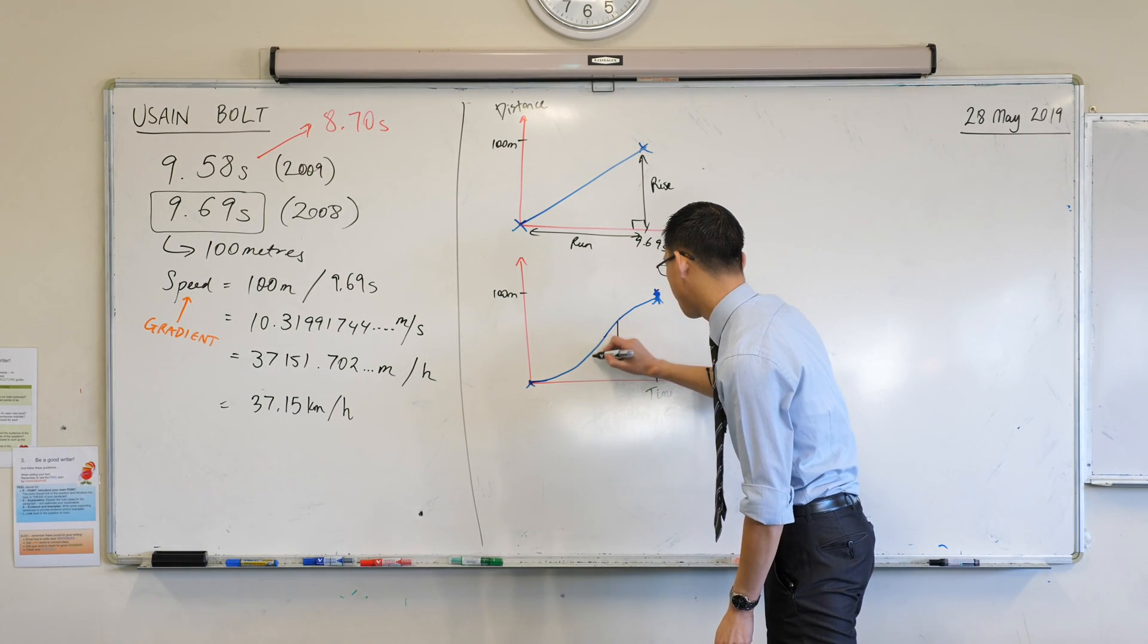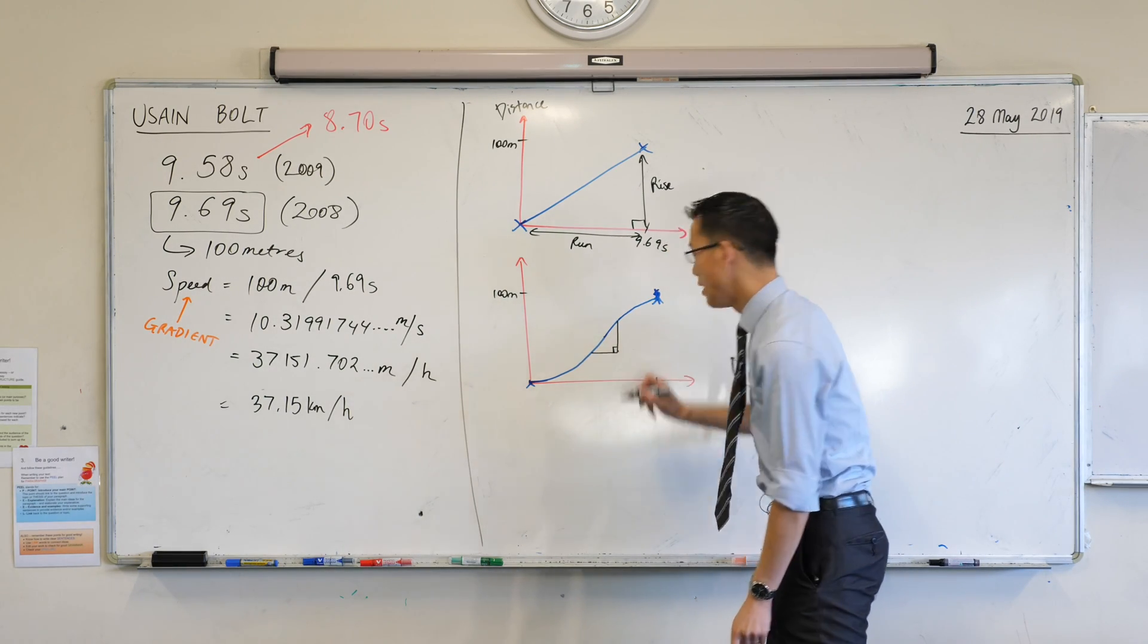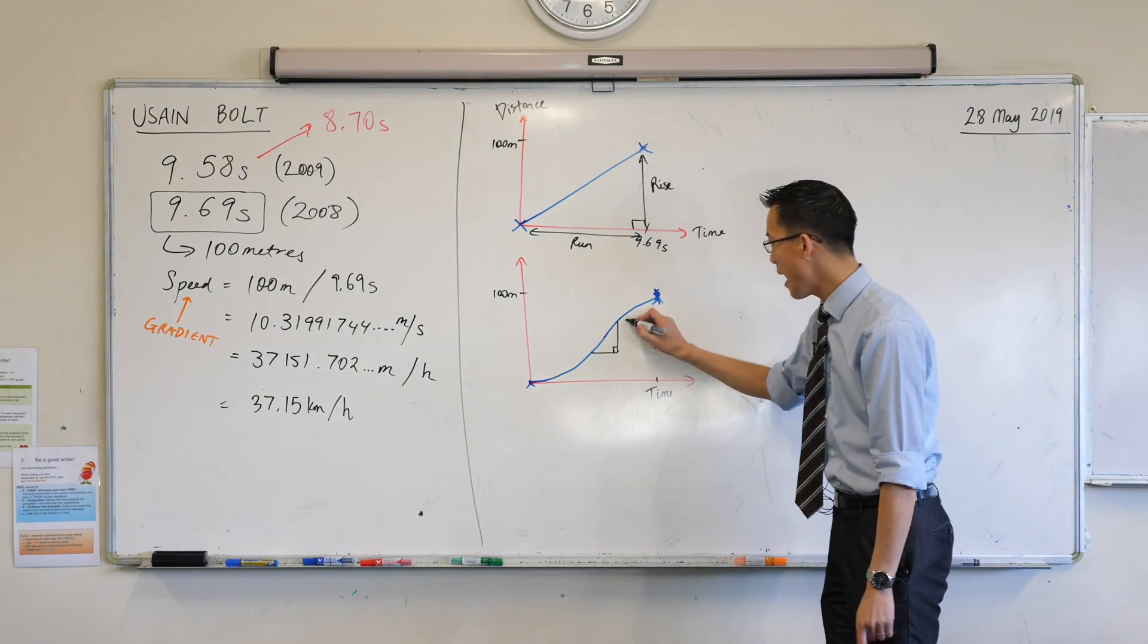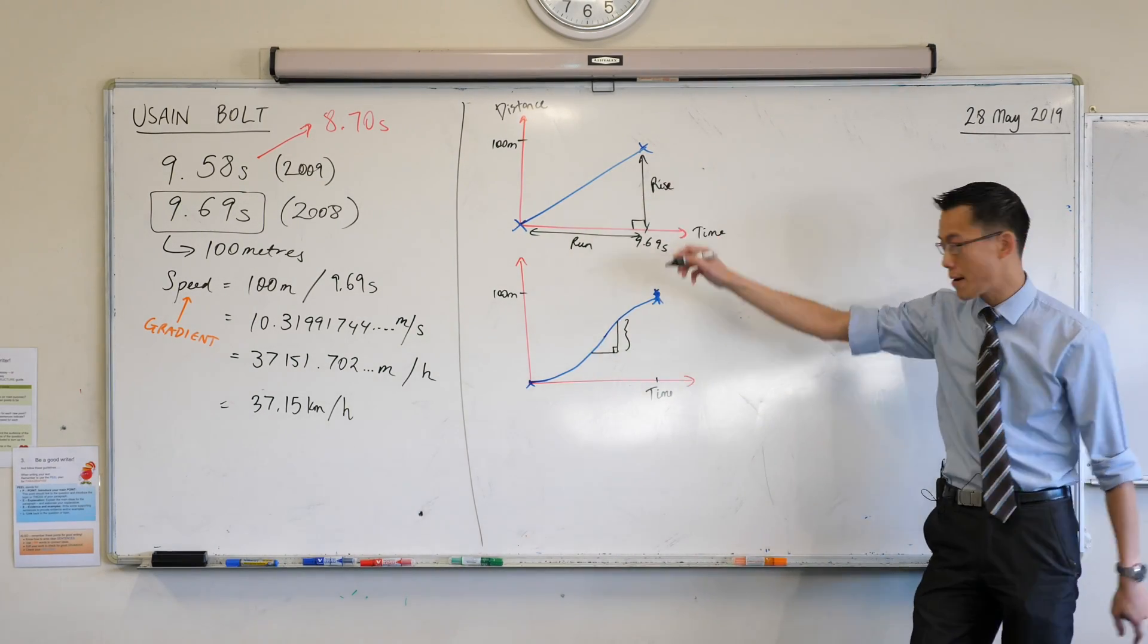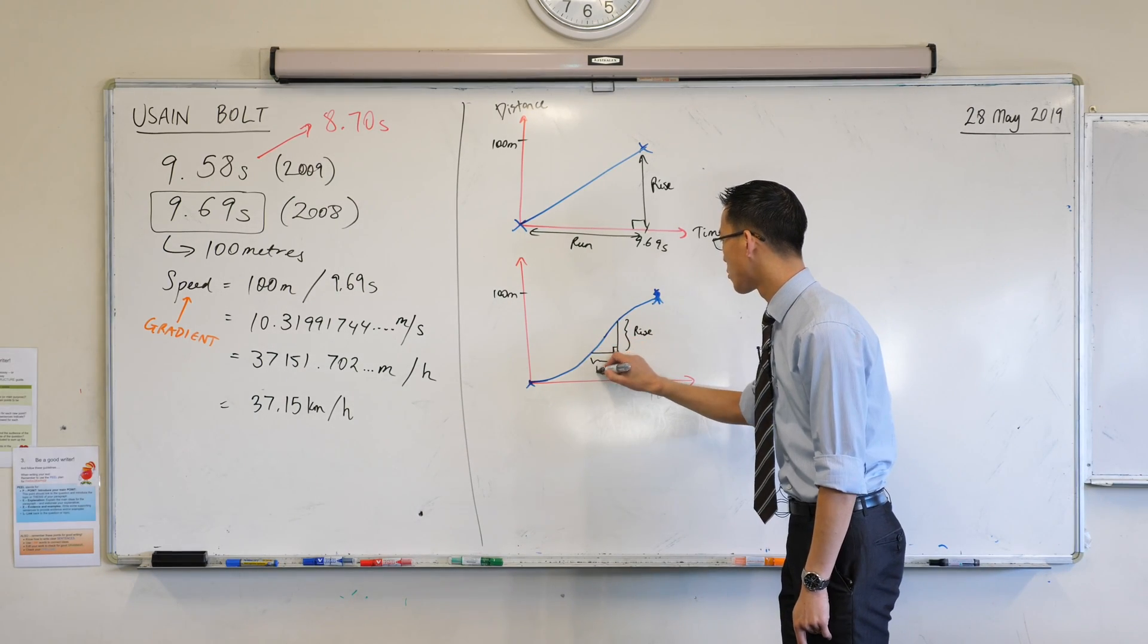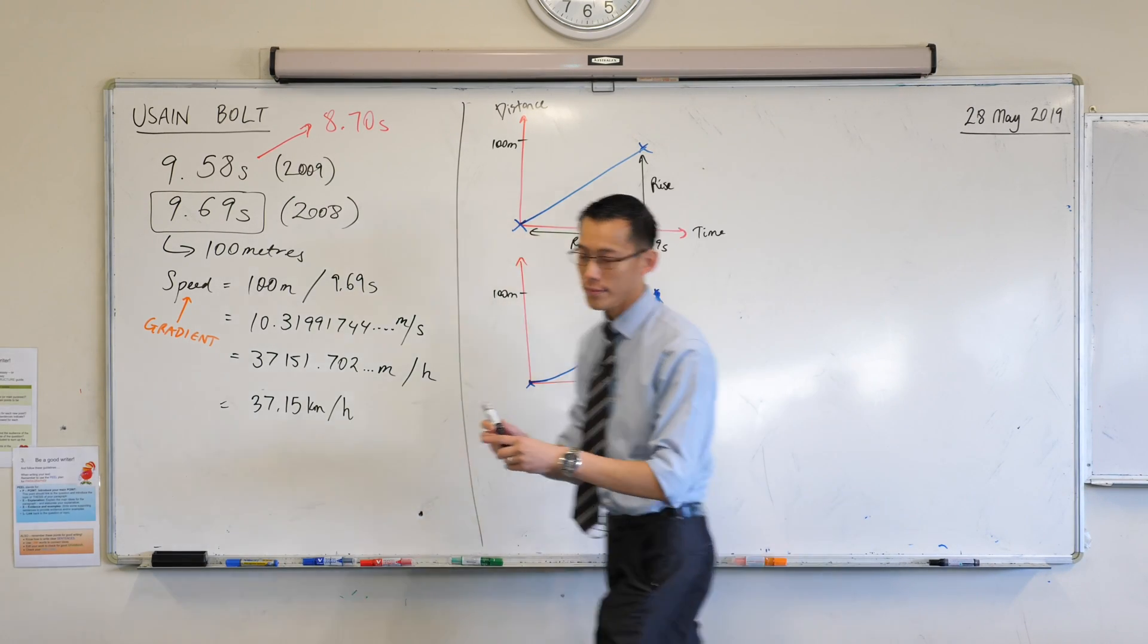So just obviously pick it on your graph. I think mine's around here. So you can draw yourself in, a nice little right-angled triangle there. And just like on mine, can you represent you've got the rise here and then you've got the run.